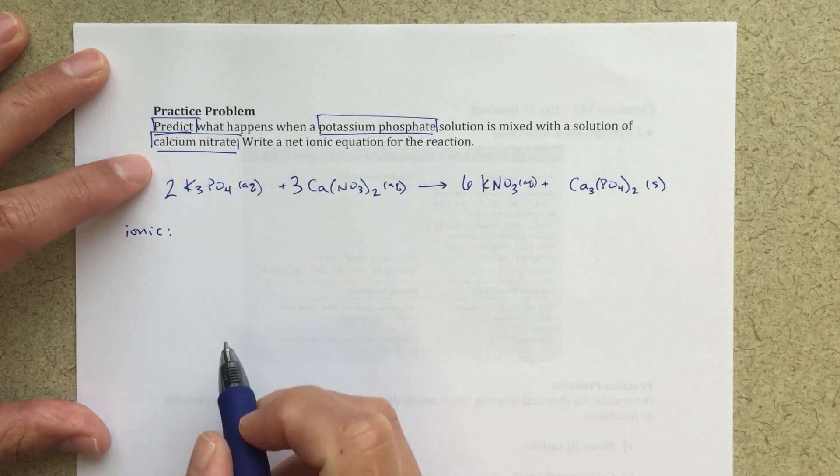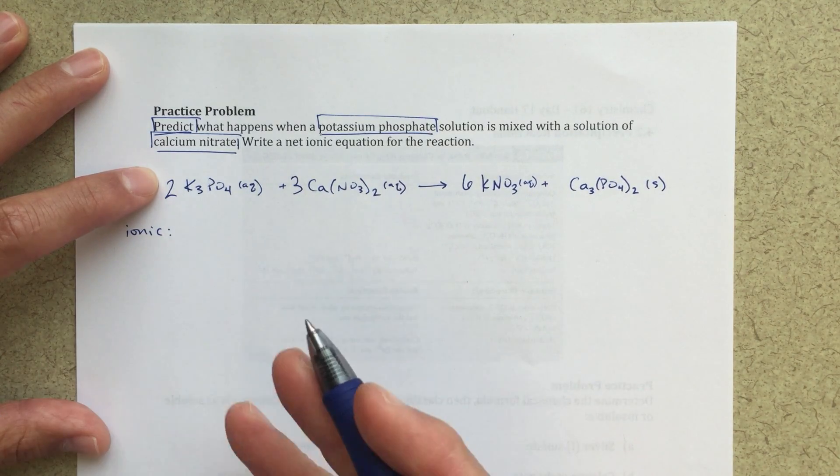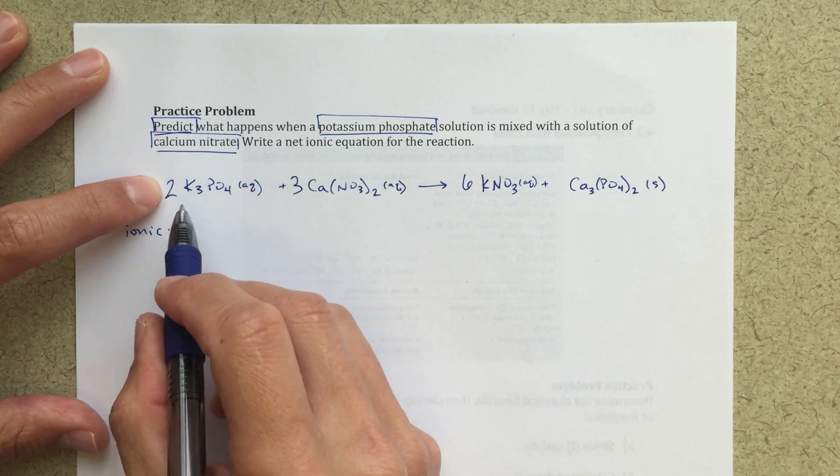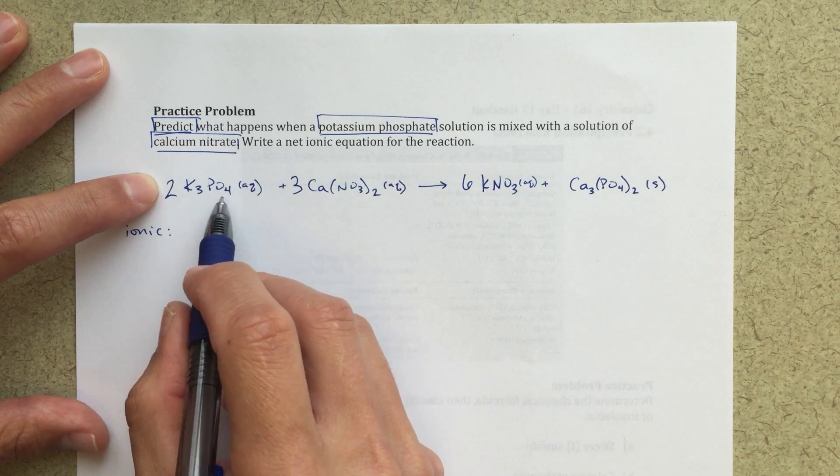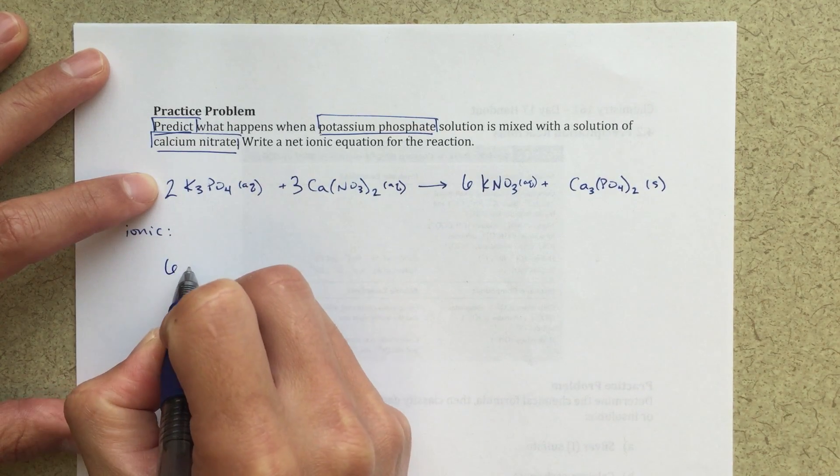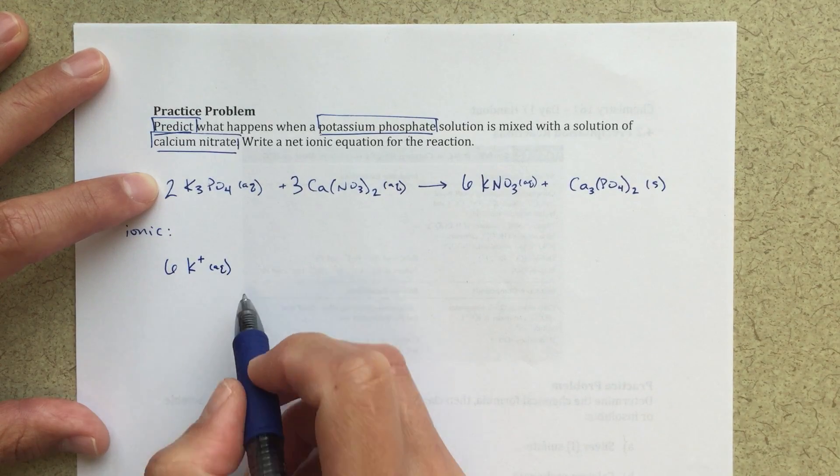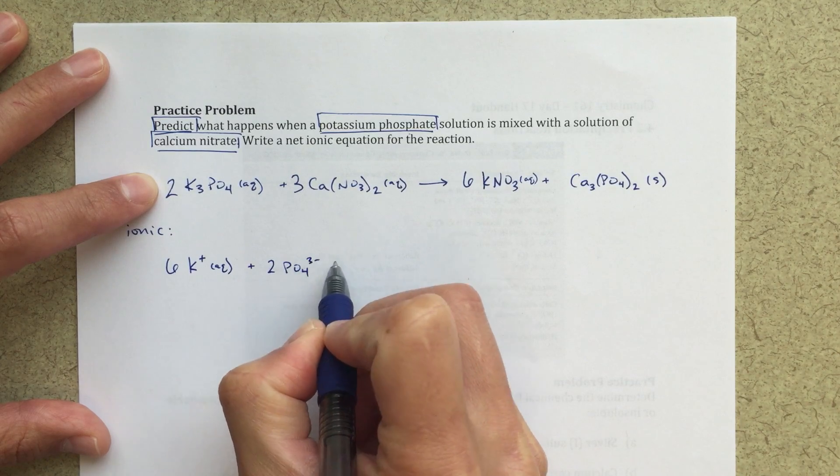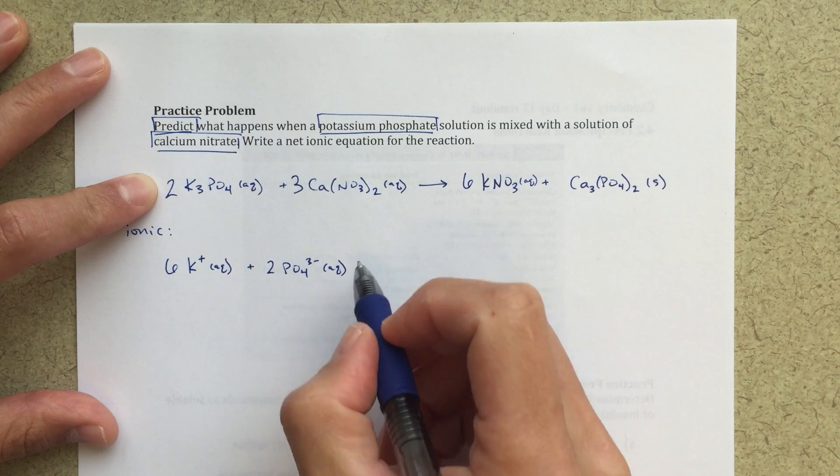So my ionic equation is going to be where I take these different species, and I write them in terms of the ions that they are. So for this potassium phosphate, I've got two of these K3PO4 species. So in total, I've actually got six K plus ions. So six K plus aqueous plus two PO4 three minus aqueous. And it's really important that I'm writing in my different charges for those.